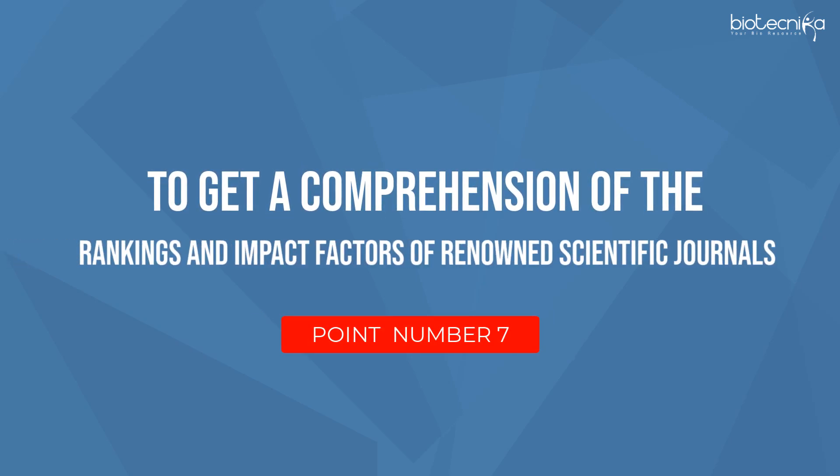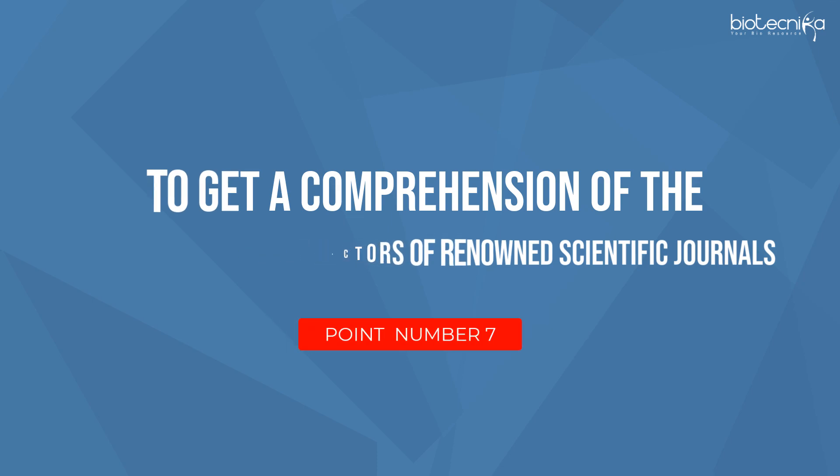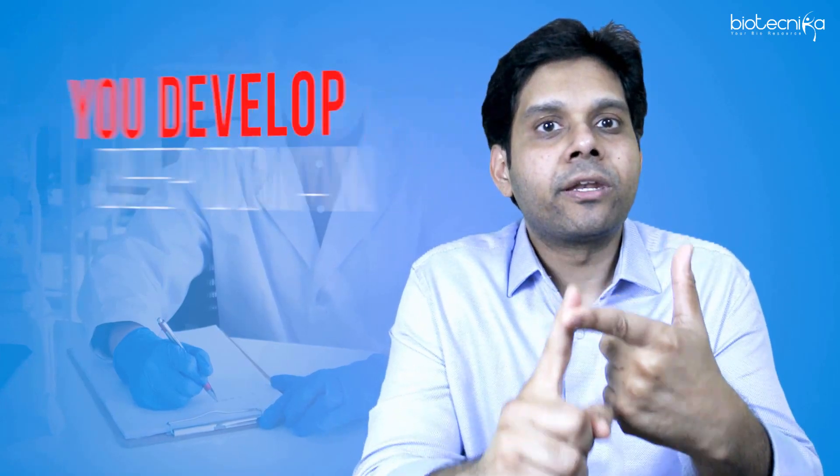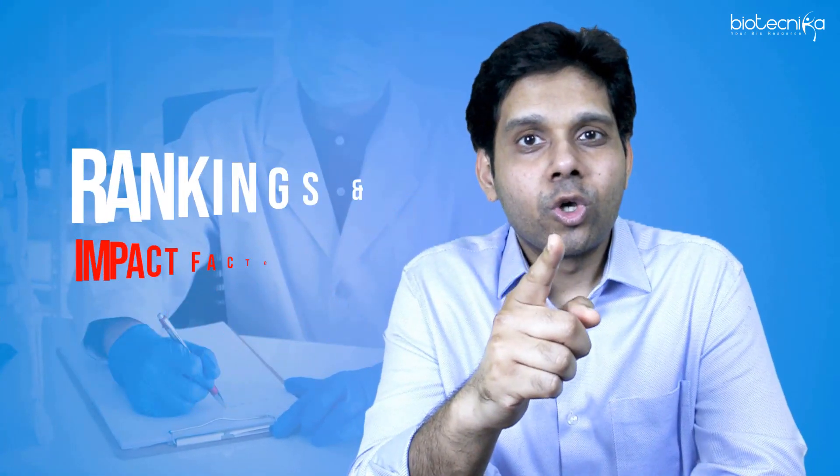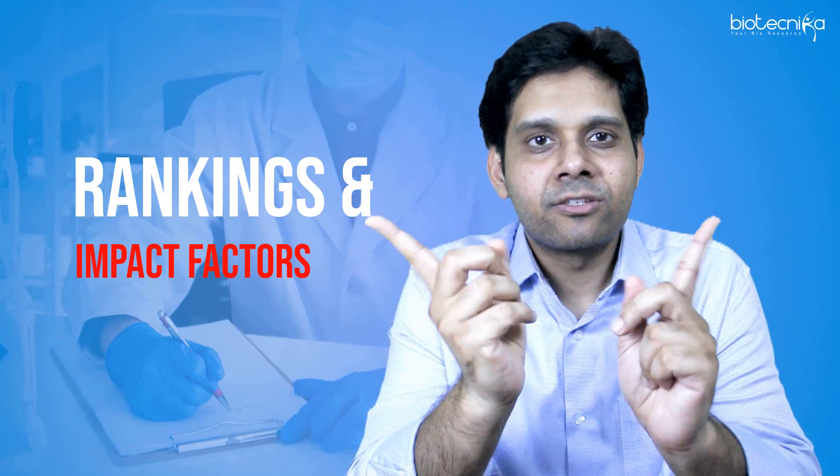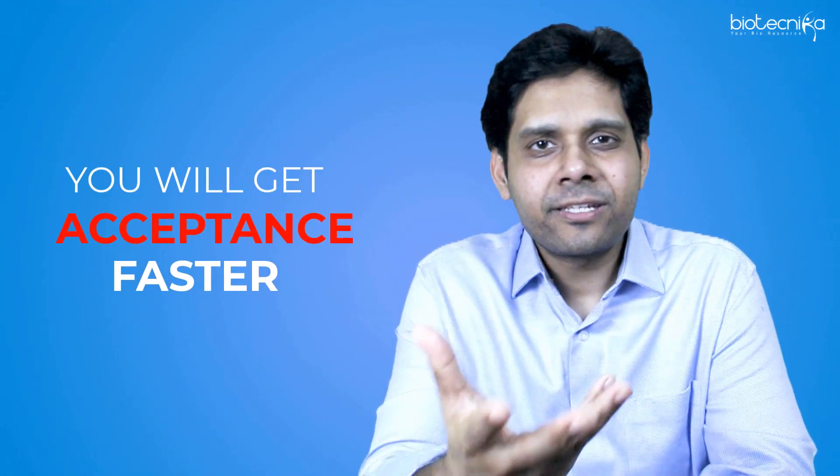Point number seven: to get a comprehension of rankings and impact factors of renowned scientific journals. When you refer to research papers from multiple sources, you develop a deep domain expertise and understanding. You get to know the ranks and impact factors of various journals. This helps you apply to the right journal whenever you decide to write and submit your own research paper, so you get acceptance faster.